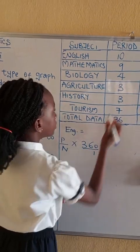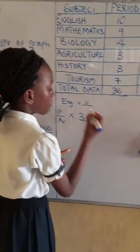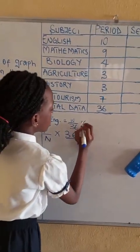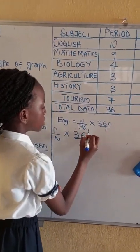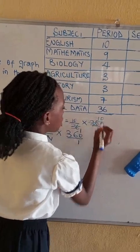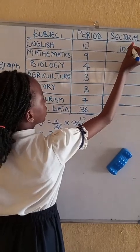English, 10 which is a period, over the number of period, total sum of period, 36 times 360 over 1. 36 cancels to 1 and 10. So 10 times 10 is 100. 100 degrees.